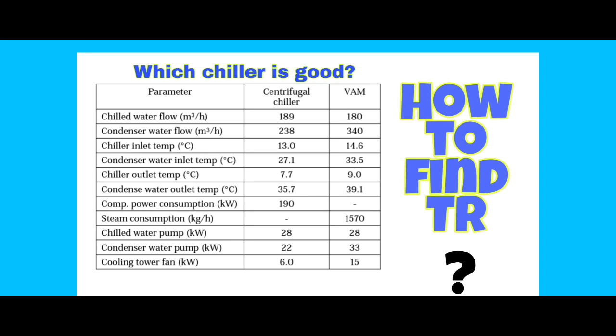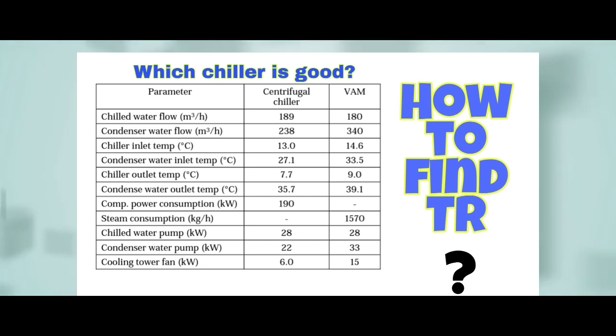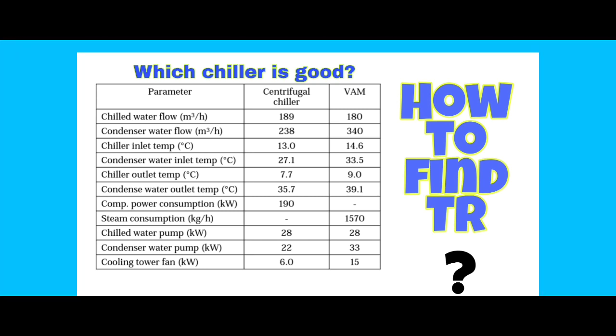The parameters are displayed as TR value and auxiliary power consumption. We will talk about the parameters: Chiller Water Flow Rating, Condenser Water Flow, Inlet Temperature, Condenser Water Inlet Temperature, Chiller Outlet Temperature, Outlet Temperature, Power Consumption, Steam Consumption, Chiller Water Pump, and Cooling Tower Fan.